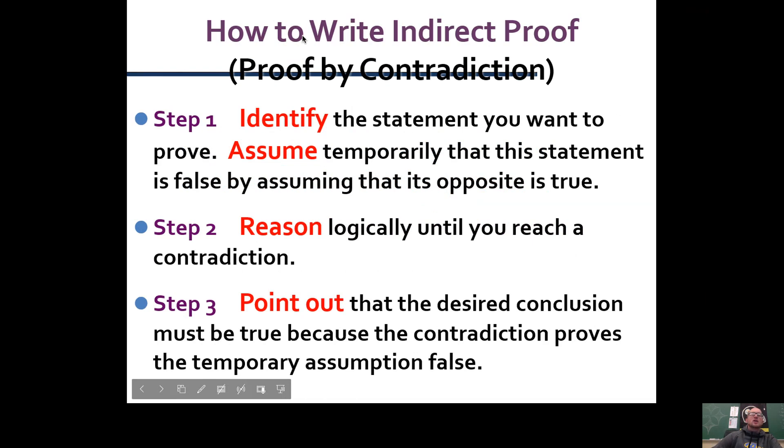Here's how you would write an indirect proof. Step one is to identify the statement you want to prove. Assume temporarily that this statement is false by assuming that its opposite is true. Step two is to reason logically until you reach a contradiction. At that point you're going to point out that the desired conclusion must be true because the contradiction proves that the temporary assumption is false.